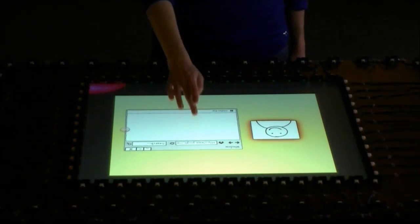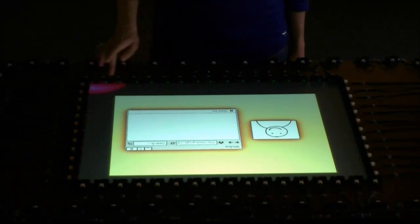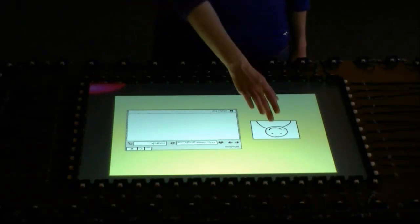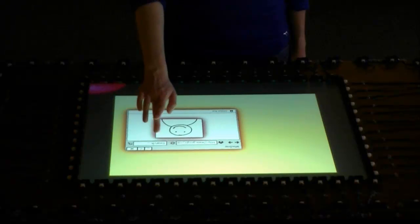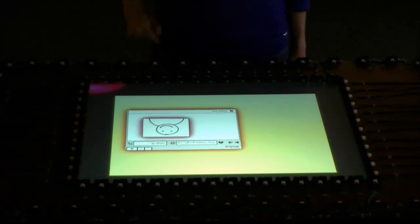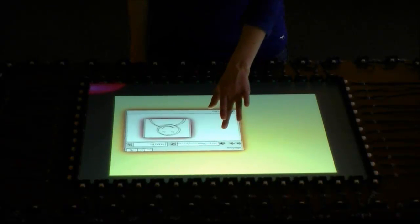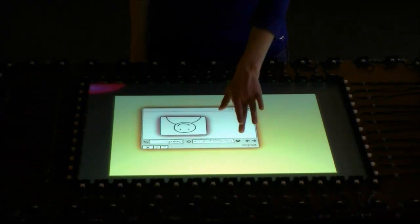Hand choice is also used to differentiate between group and individual manipulations. If a user has created a group of components and only wants to manipulate one element within the group, they can drag that element with their right hand. If the user wants to manipulate the entire group, they can do so with their left hand.